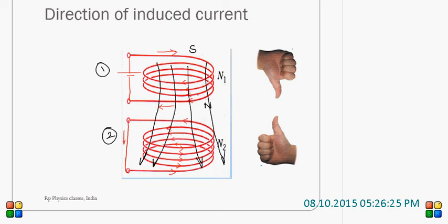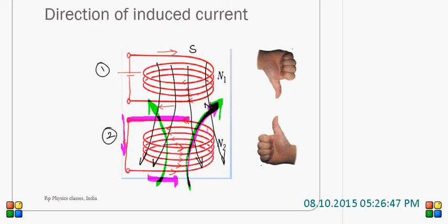By inducing current in a direction so that it can oppose the already existing magnetic field, it has to produce the magnetic lines in the opposing direction. By inducing current in the shown direction — when the current flows this way and current flows down here — the magnetic field will be opposing the already existing magnetic field.